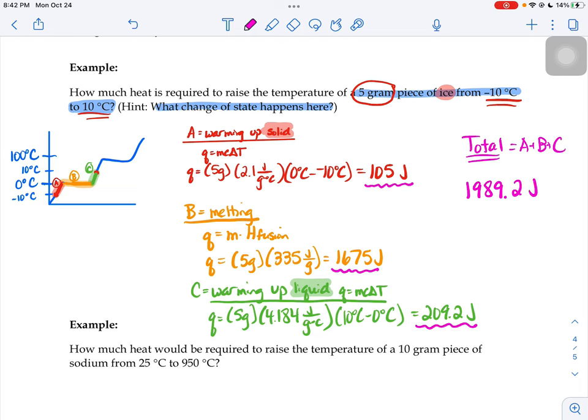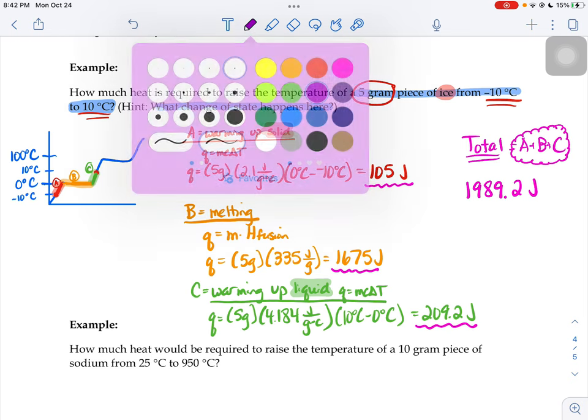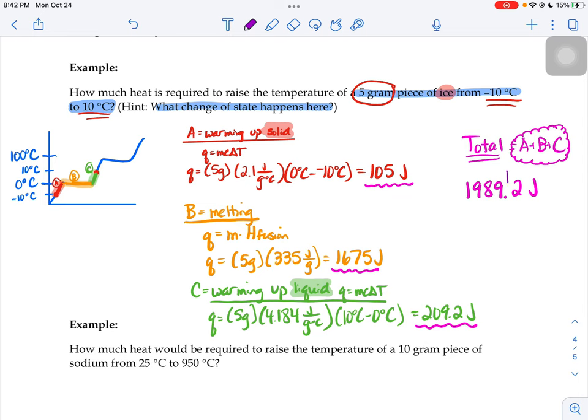Since this is the last time I'd hit my equals button on my calculator, now is where I would sig fig round. Since our last step required us to do some addition, I'm going to default to those addition rules. I have two numbers that don't have decimal places and one that does, so I'm going to round it to make it match the same number of decimal places as my worst numbers. So I would round it to 1,989 joules.